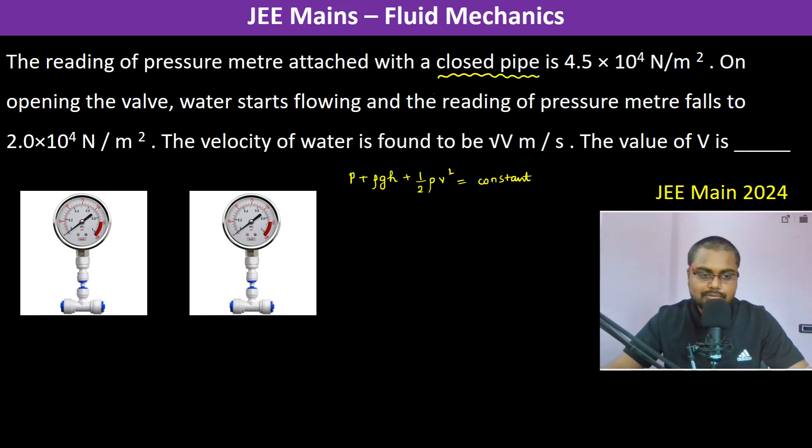In the first case we are writing this is closed. So therefore, here what we can apply is P1 plus rho g h plus half rho v square is equal to constant. Here velocity is zero. Pressure is given here. This pressure P1 is 4.5 into 10 to the power 4 Newton per meter square.